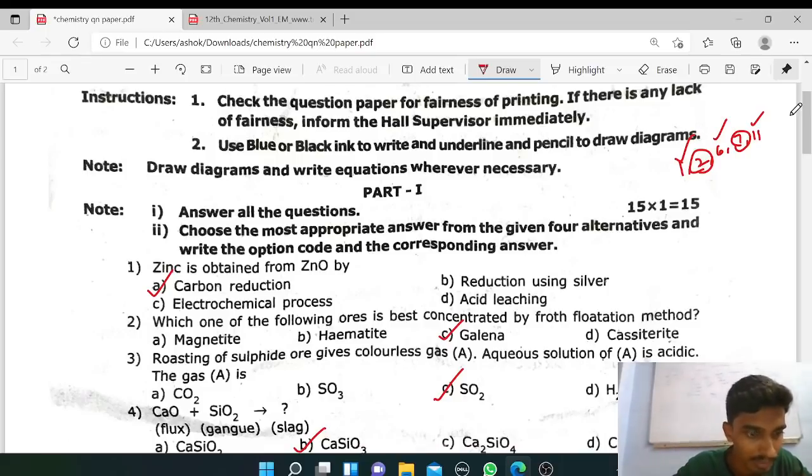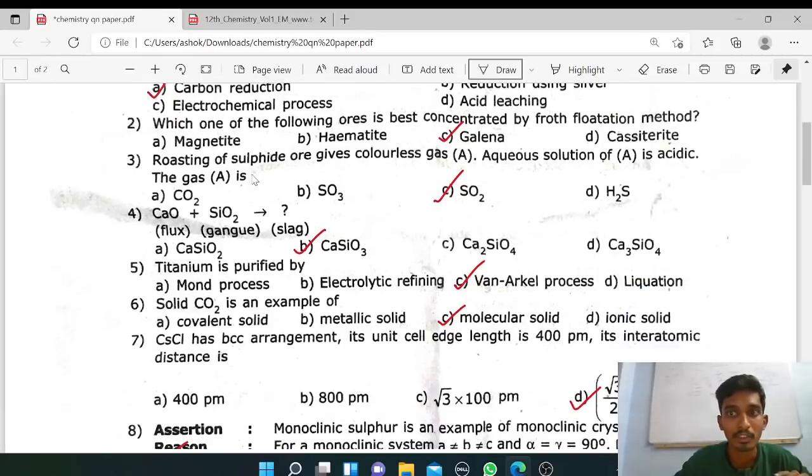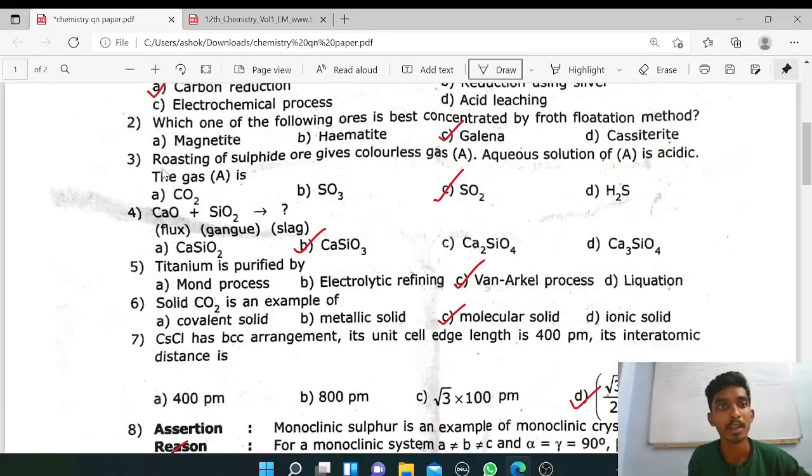Organic chemistry is very easy with easy questions. First question, zinc is obtained from zinc oxide by carbon reduction, option B. Second question, flotation process, so flotation on the galena, option C. Third question book back.